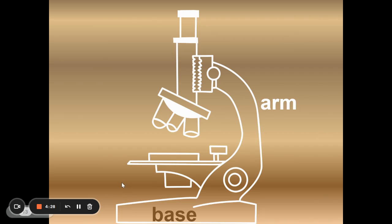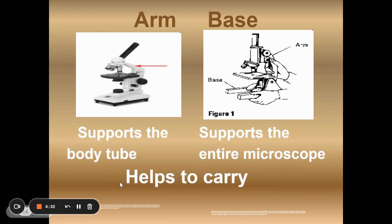Next are the arm and the base. The arm and the base, both of them are used to carry the microscope. So you put your dominant hand on the arm. And as you can see by these two illustrations in this picture that they don't always look the same. So you put your dominant hand on the arm and your other hand underneath the base. And then you carry the microscope close to you.